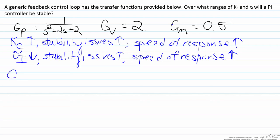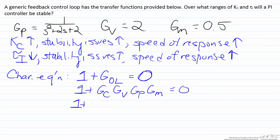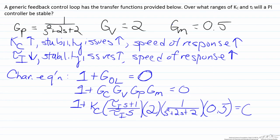In order to conduct stability analysis we're interested in the denominator of our transfer function, which can be represented by the characteristic equation, which states that one plus the open loop gain is zero. Therefore that will be one plus the transfer functions for the controller, the valve, the process, and the transmitter. We have a PI controller here, so that will have the transfer function Kc times tau I s plus one over tau I s. The valve is given as a transfer function of two. The process has a transfer function of one over s squared plus two s plus two, and the transmitter has a transfer function of zero point five.